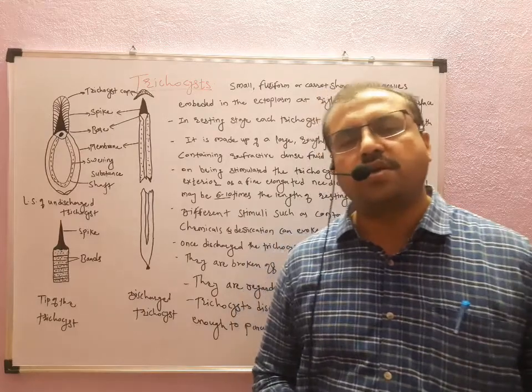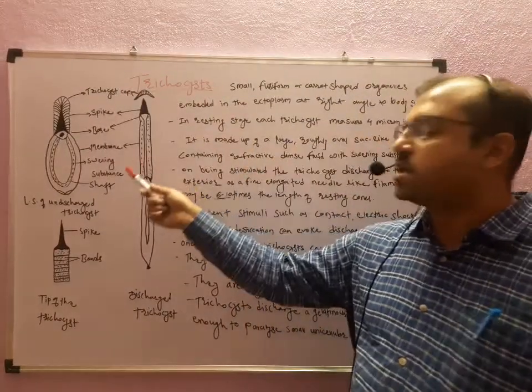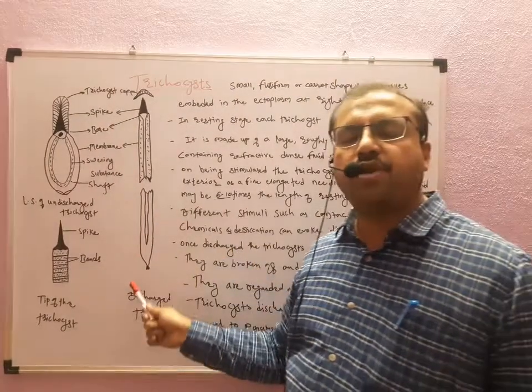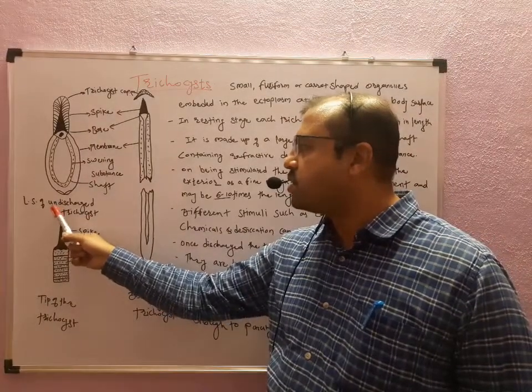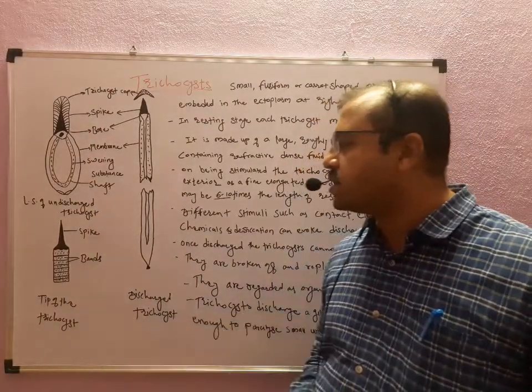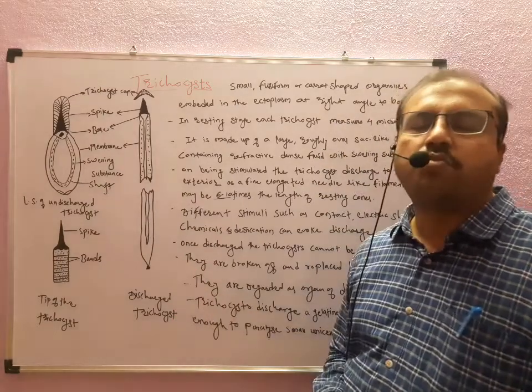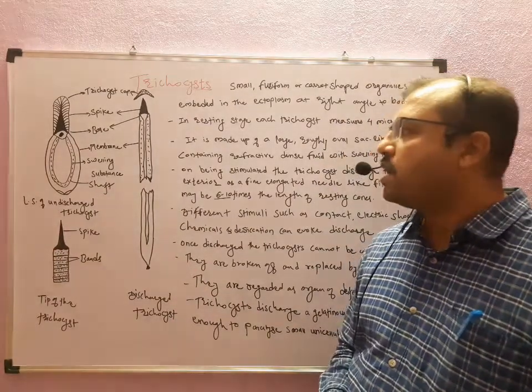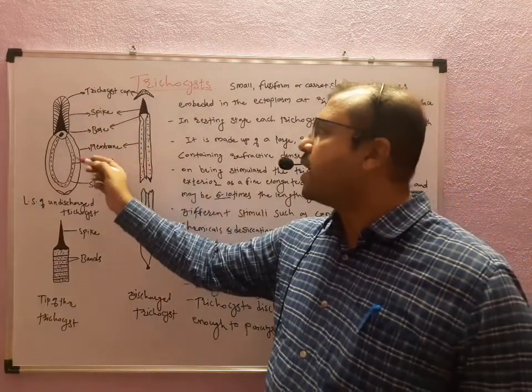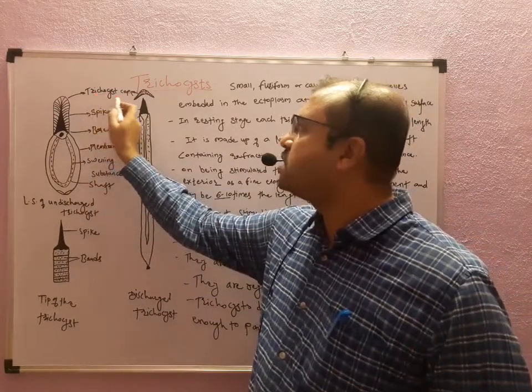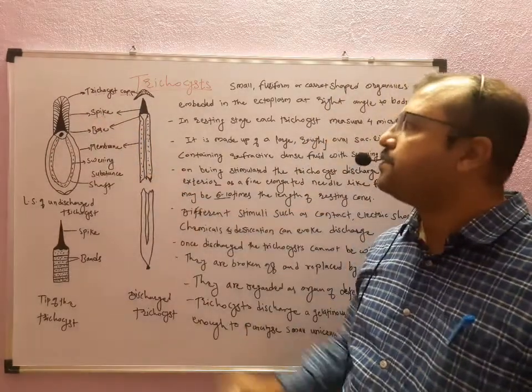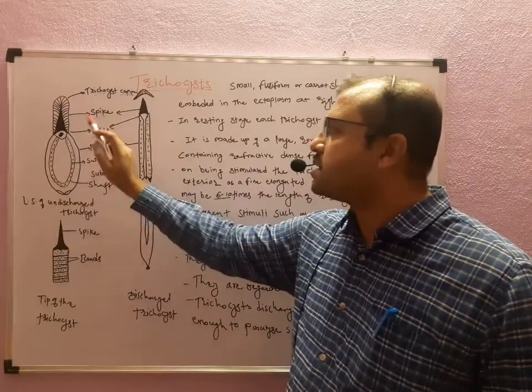This is about the structure of trichocyst, how it looks like. Here I have drawn three different figures. The first figure shows the longitudinal section of undischarged trichocyst, then the tip of trichocyst, and the discharged or broken trichocyst. If we see this undischarged trichocyst, it is somewhat shrunk and having this structure. Anteriorly it is having the trichocyst cap, and it is having the spike which covers the cap, arising from this base.